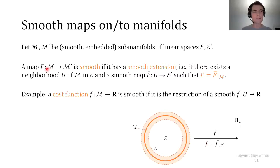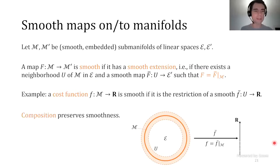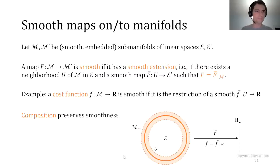We're going to say that a function on a manifold is smooth if it's possible to smoothly extend it—to find some F̄ smooth on a neighborhood of the manifold such that F and F̄ coincide on the manifold. The big thing about that definition is that if you have two smooth maps on manifolds and you can compose them with the domains just right, then the composition is still smooth.